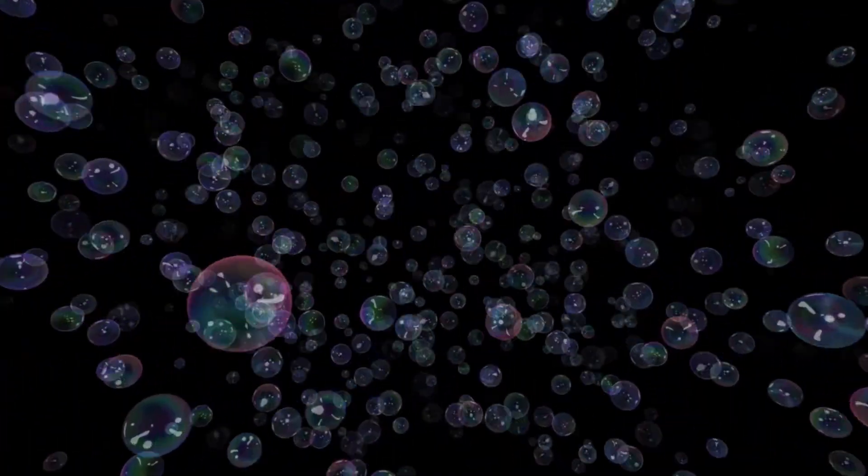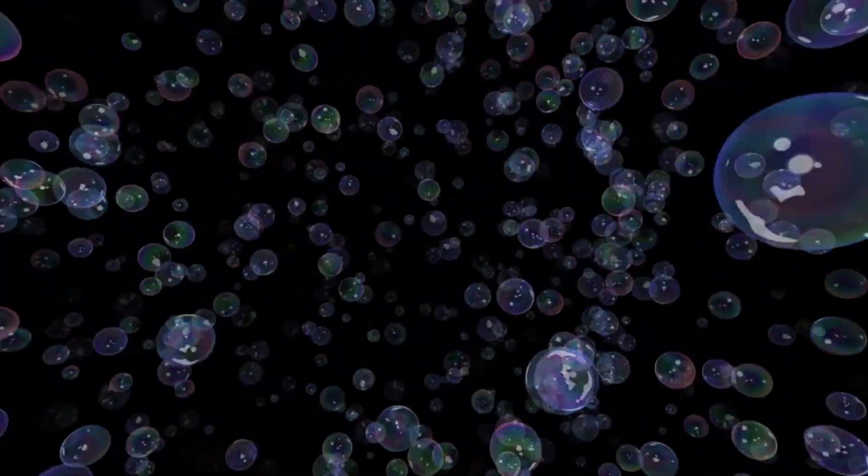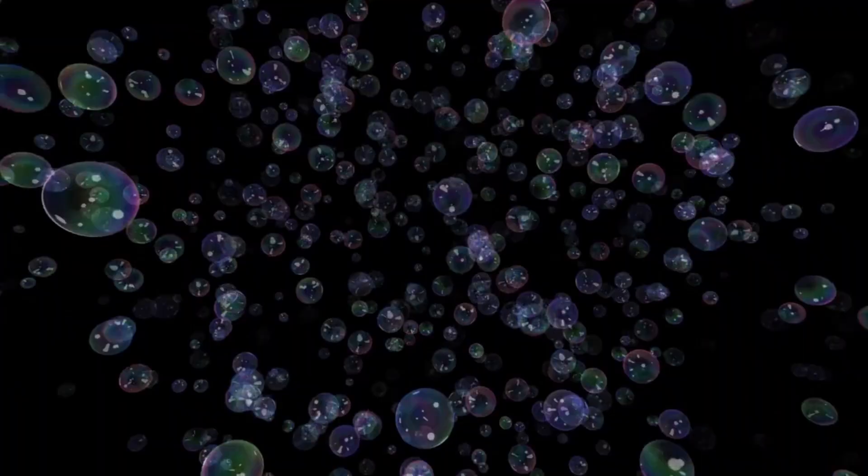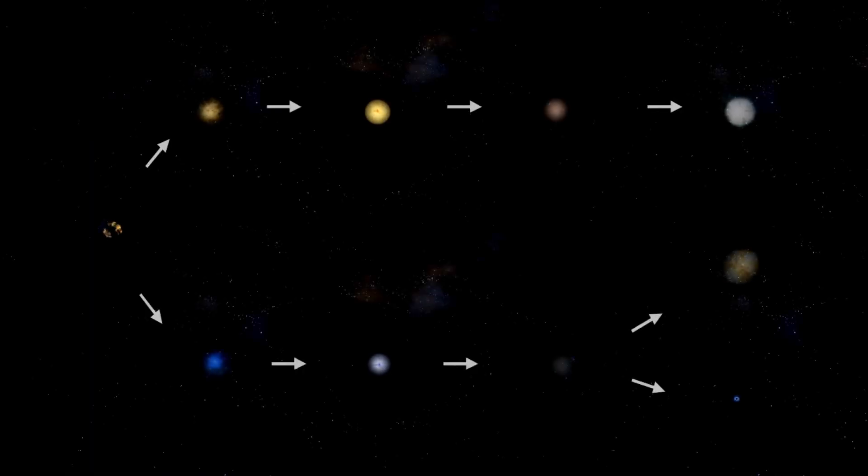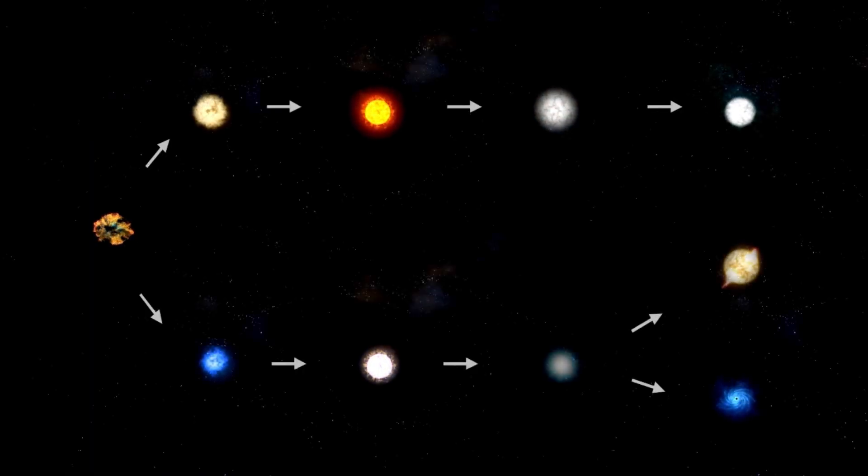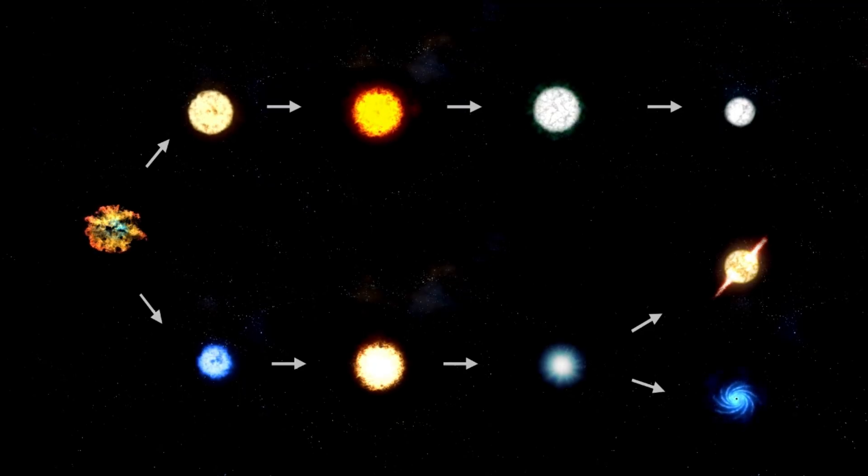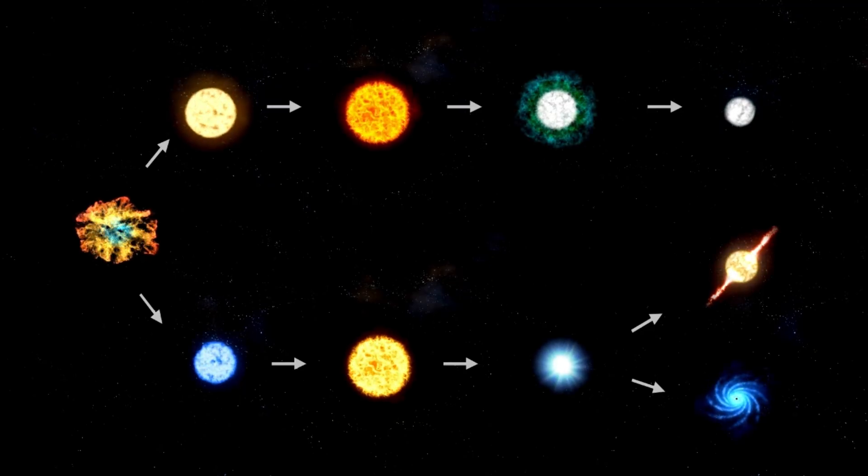This mysterious bubble is massive, stretching around 1,000 light-years across. Intriguingly, our sun sits near its center. Could we be trapped inside this enormous cosmic structure? Is it a shell formed by past supernovae? Or is it some kind of magnetic boundary? What does this mean for our understanding of space and our place in the galaxy? These are the questions scientists are now trying to answer.